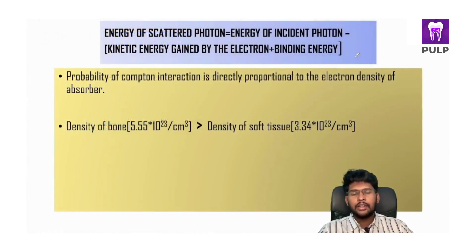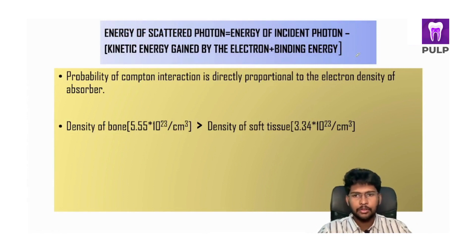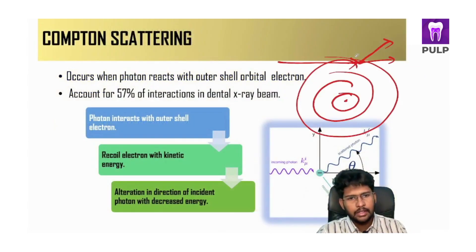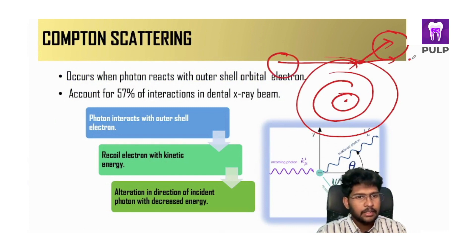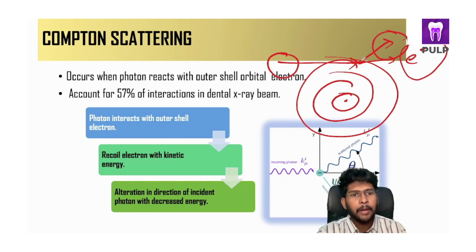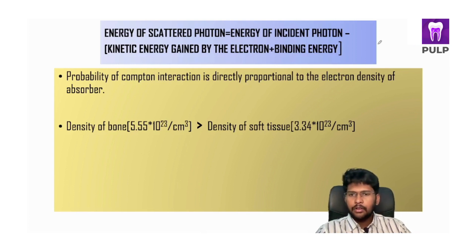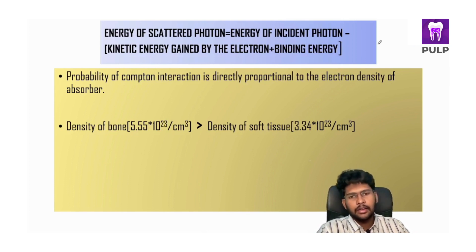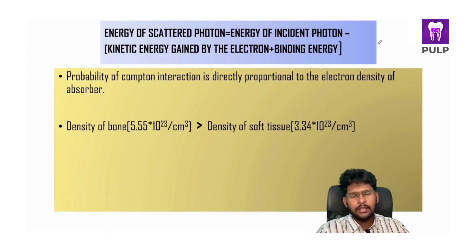The energy of the scattered photon equals the energy of the incident photon minus the kinetic energy gained by the electron plus the binding energy of that electron. The probability of Compton interaction is directly proportional to the electron density of the absorber — if there is higher density, there is a higher chance of Compton interaction, and when the electron density is less, there is less chance of Compton interaction.